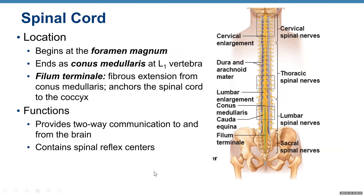Location. The spinal cord begins at the foramen magnum — that's the big opening inferior on your skull — and it ends as the conus medullaris at L1 vertebra. L1 is lumbar 1. We have five lumbar vertebrae, so your spinal cord is shorter than your vertebral column, because you have five lumbar, sacrum, and coccyx. The conus medullaris ends at level L1.